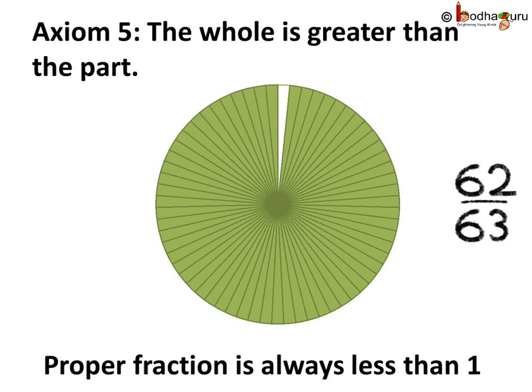Even 62 by 63 is less than one that represents the whole object because a tiny fraction is missing from one to make it 62 by 63. Thus, whole is always greater than a part. That's why we say proper fraction is always less than one.